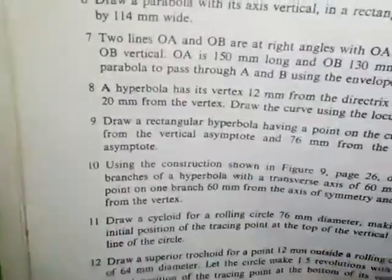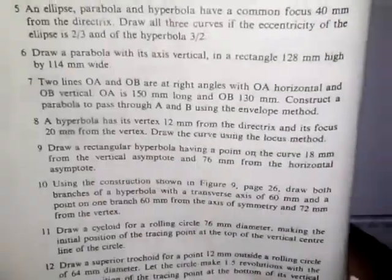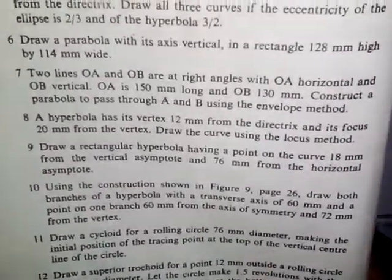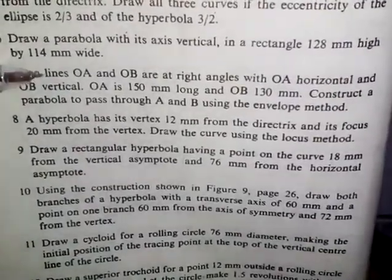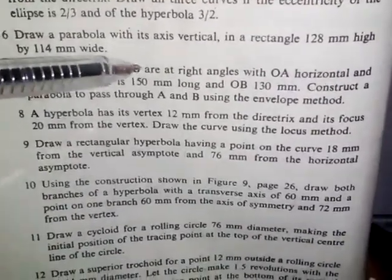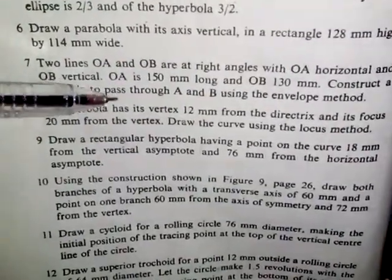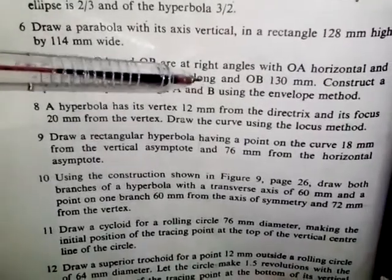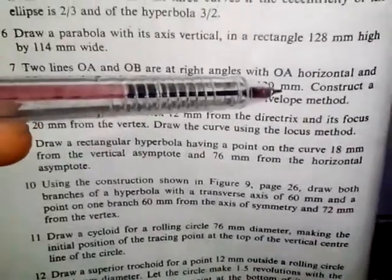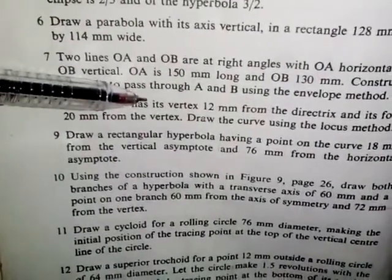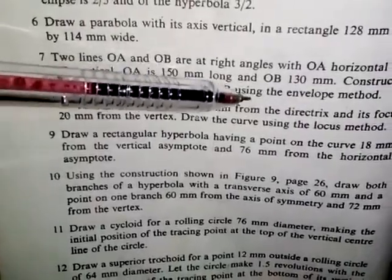The question I want to solve now is question 7 from the textbook Engineering Drawing 1, written by Pico Pampaka. Question 7 states: there are two lines OA and OB at right angles, with OA horizontal and OB vertical. OA is 150 millimeters long and OB is 130 millimeters. Construct a parabola to pass through A and B using the envelope method.